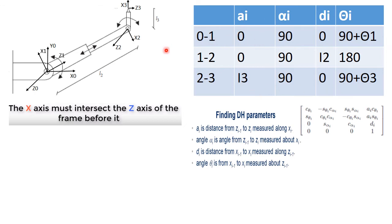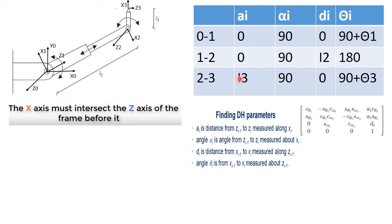Now we can fill the DH table. For the transformation from frame 0 to 1, we need a1, alpha1, d1, and theta1. Parameter a1 is the distance from Z0 to Z1 measured along X1 — there is no change, so a1 equals 0. For frame 1 to 2, Z1 to Z2 along X2 also has no change, so a2 equals 0. Finally, Z2 to Z3 along X3 equals L3, so a3 equals L3.